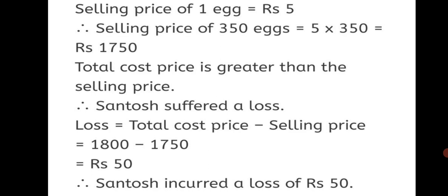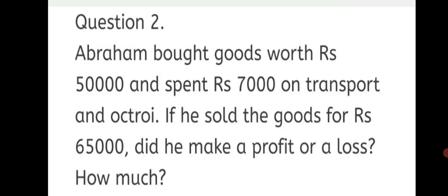In this sum, we first found the total cost price, then subtracted the eggs that fell and broke to find 350 remaining eggs, multiplied by 5 to find the total selling price, then subtracted from total cost price to find the loss. Question 2: Abraham bought goods worth Rs. 50,000 and spent Rs. 7,000 on transport and octroi. His total cost price = Rs. 50,000 + Rs. 7,000 = Rs. 57,000. He sold goods for Rs. 65,000. Since selling price is greater than total cost price, he made a profit.